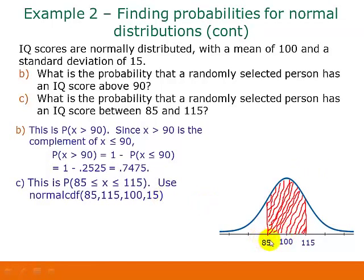So for this we can just use 85 as our lower bound and 115 as our upper bound on our calculator, and we put in the 100 for the mean and the 15 for the standard deviation. And this gives us an answer of 0.6827.